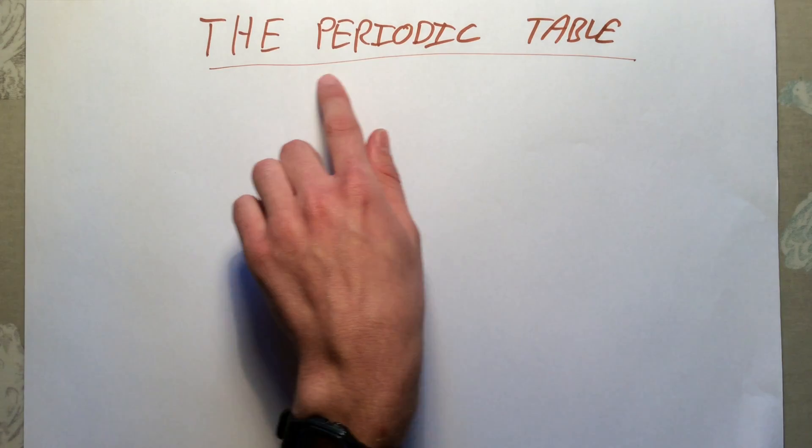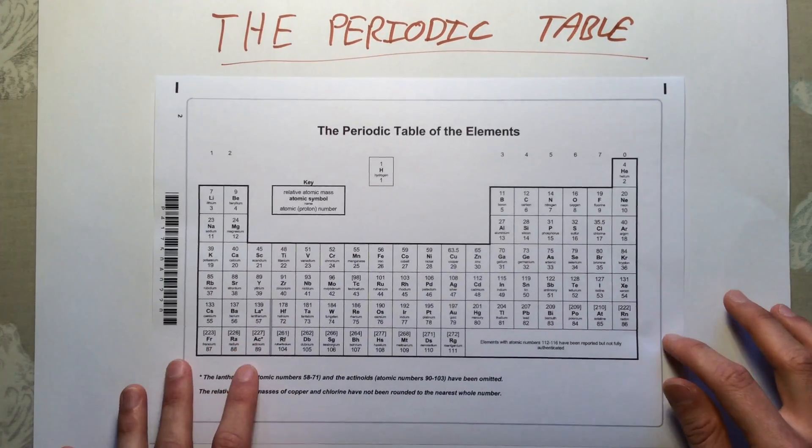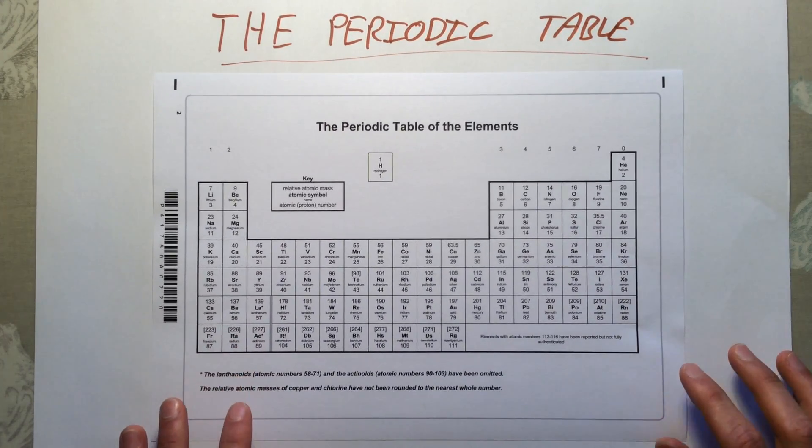This series of videos is going to cover the first topic in the Edexcel additional chemistry course. The title of this topic is atomic structure and the periodic table, so we're going to start off by diving straight in and looking at the periodic table.